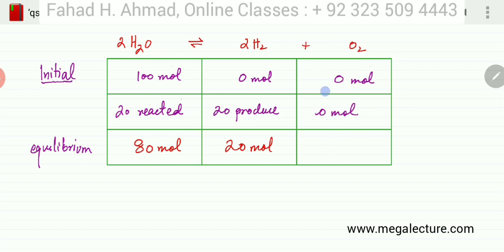And this would actually be, let me correct this, this should be 10 moles because the ratio is that if 2 is produced, 1 of O2 would be produced. It's 2 ratio 1. So if 20 are produced, then 10 moles of O2 would be produced. So the moles of O2 at equilibrium would be 10 moles. So these are my equilibrium moles and these are my hypothetical values.